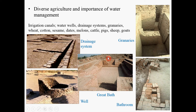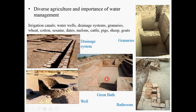People also find evidence of very diverse agriculture — all kinds of crops: wheat, rice, cotton, sesame. All kinds of animals were raised: pigs, sheep, goats. There is also evidence that water management was very important at the time. These pictures show the drainage system, the water well, the great baths where people would bathe together, and bathrooms. This picture shows granaries which may have been used to store grains.